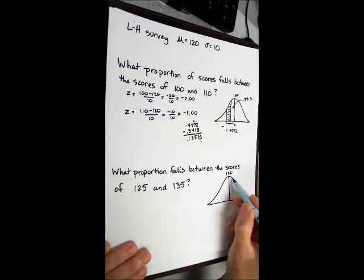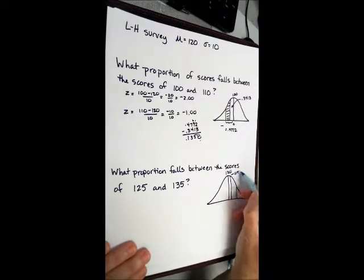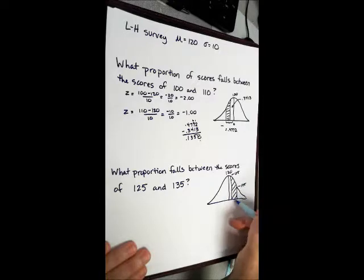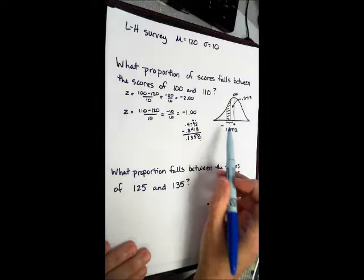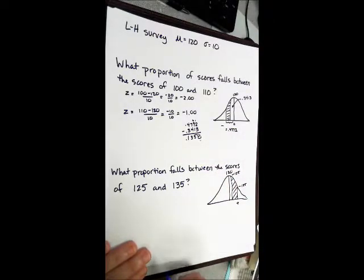We know that this is 120. We want 125, which is above it, and we want 135, which is above it. We're only looking for this proportion. So it's kind of the same thing. We're just above the mean. We know we're going to be dealing in positive numbers here.